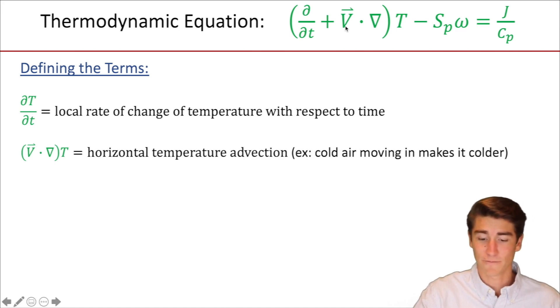The next one, V·∇, gets distributed with the T. This represents horizontal temperature advection. Now that sounds very mathy and very physics. If you want an easy way to think about it, just think of cold air moving in makes it colder.